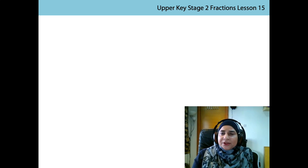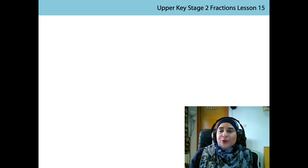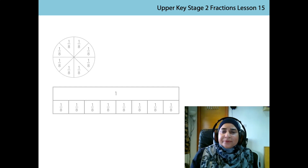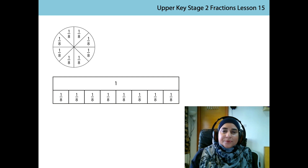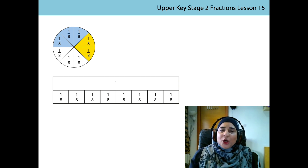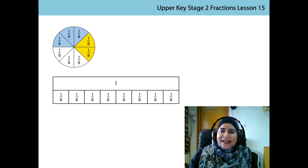I eat three eighths of the apple. My sister eats two eighths of the apple. I want to know how much of the apple we have eaten all together. Perhaps we could draw a diagram like this. The blue part represents three one eighths of the apple which I ate, and the yellow part represents the two one eighths of the apple which my sister ate. Three one eighths and two one eighths equals five one eighths.